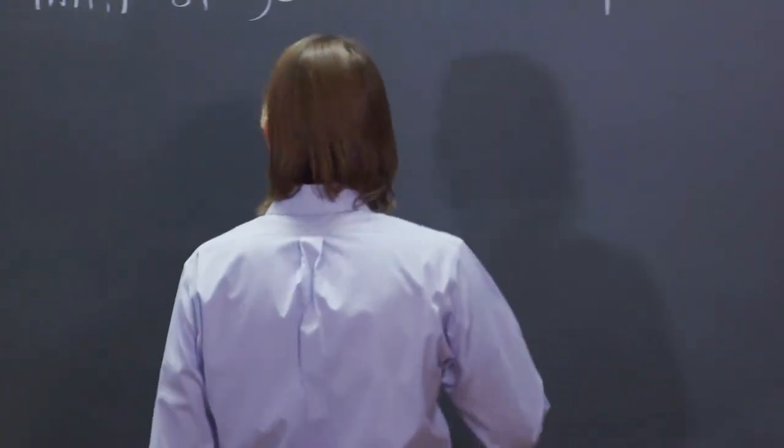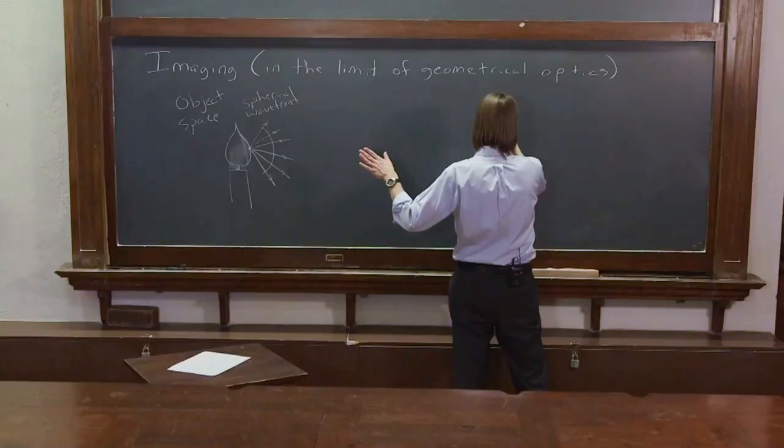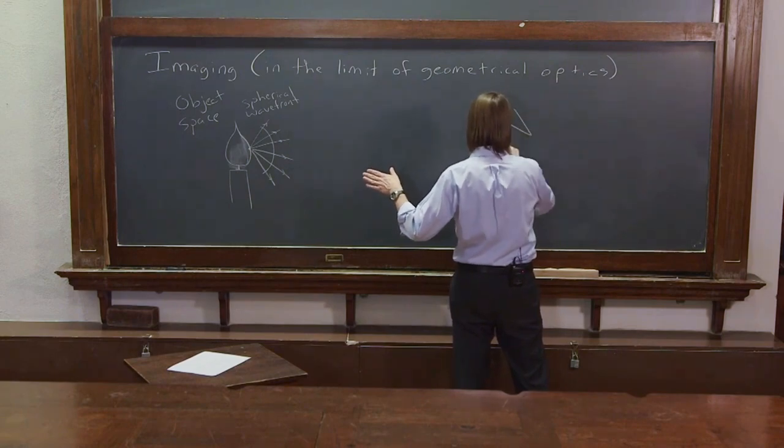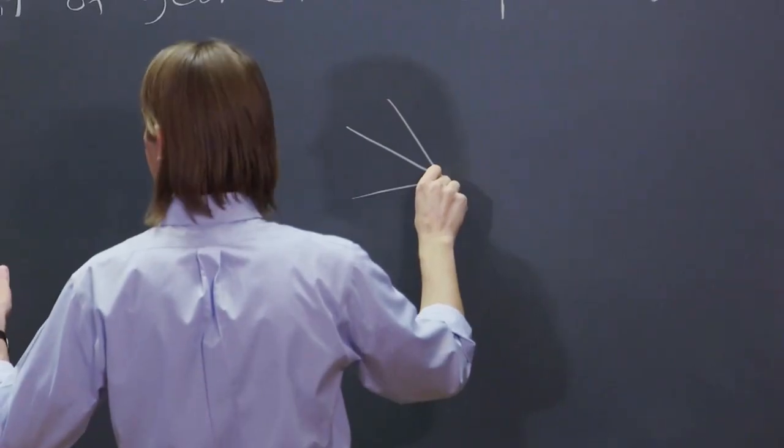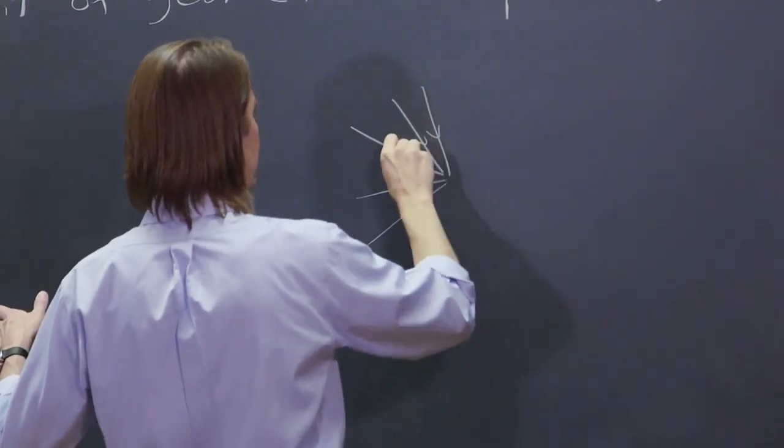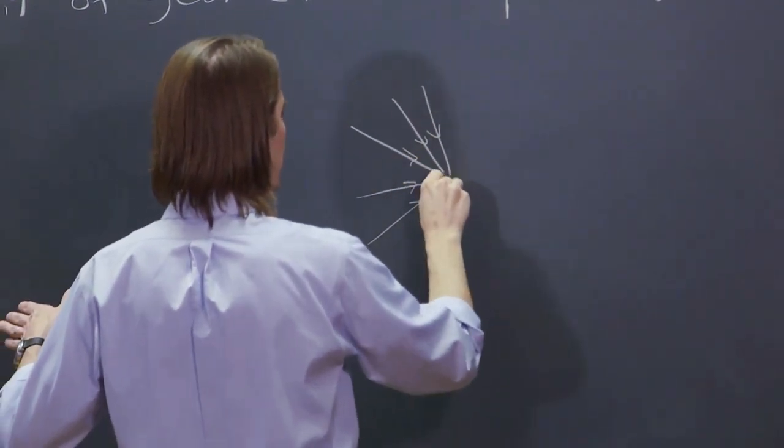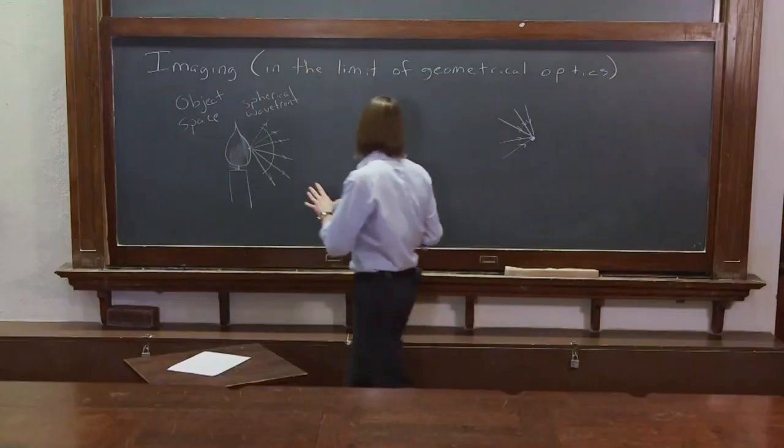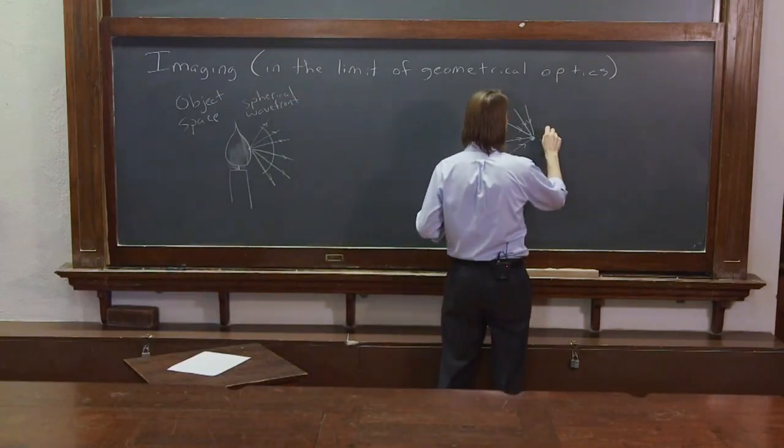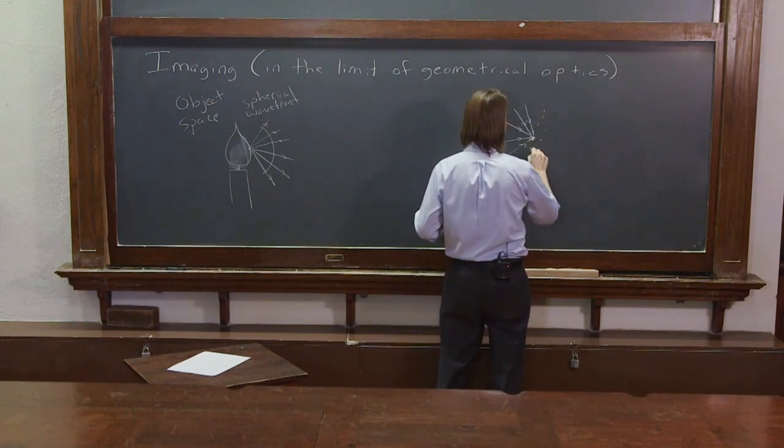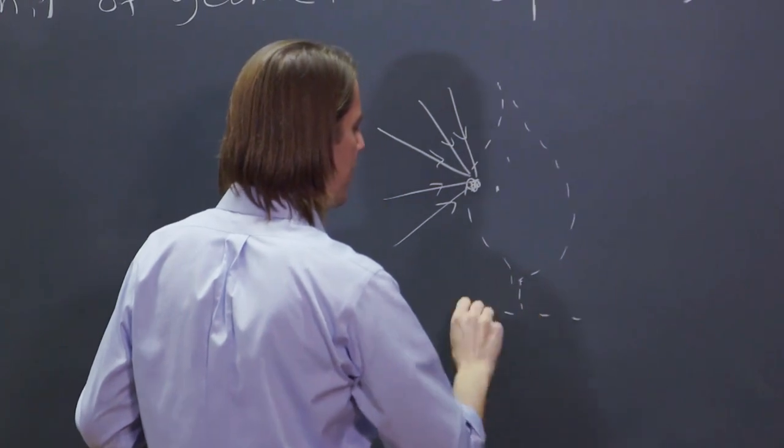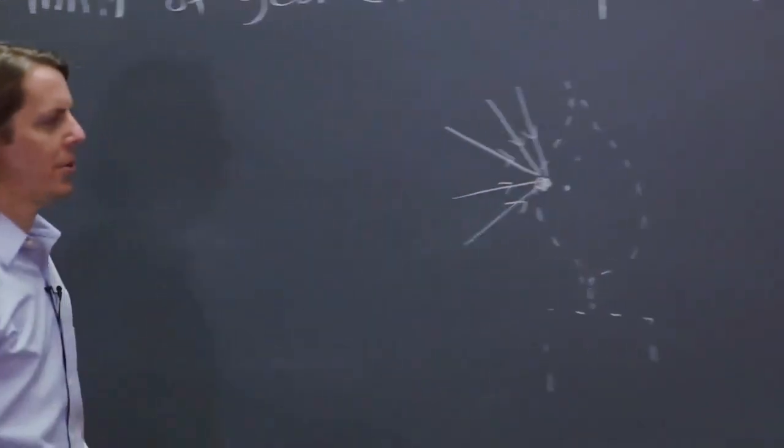So what we want is those same rays to come together again at a point. Those exact same rays come together and make that point. And then if you make another point, another point, another point, you get an image of the candle. And maybe you can see a little bit of the wax part.